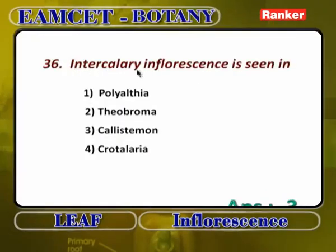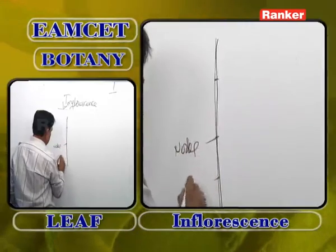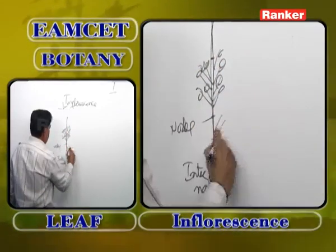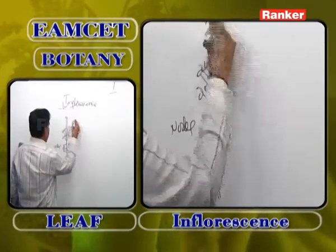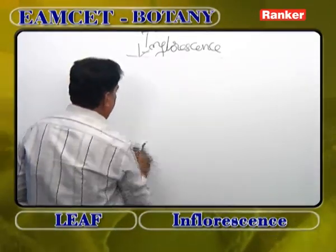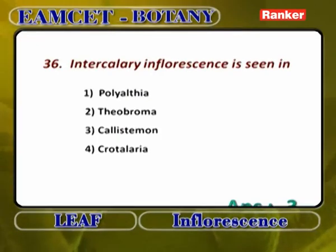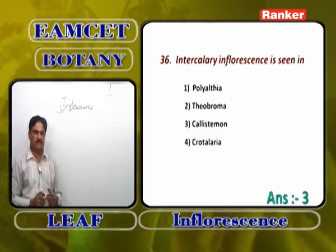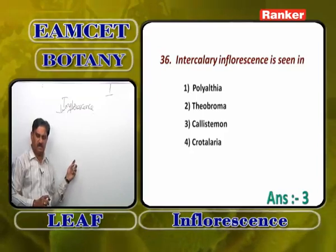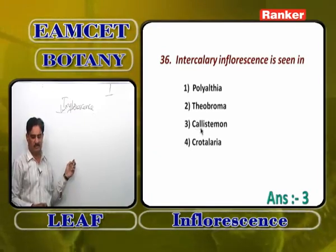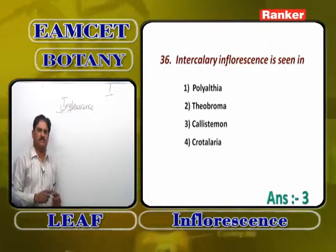Intercalary inflorescence: flowers are formed on the internodes and the growth of the stem continues after inflorescence formation — found in Callistemon. Polyalthea and Theobroma show cauliflory — formation of flowers on an old stem. Crotalaria has terminal simple raceme inflorescence. Callistemon is the plant with intercalary inflorescence, where flowers are formed on the internodes and the stem continues to grow.